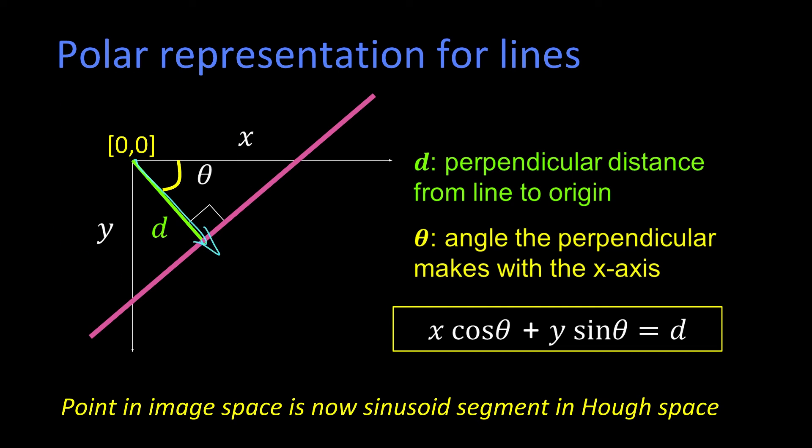But if d could be positive or negative, then theta only has to go from 0 to π, or 0 to -π, depending on how you draw that. The idea is you'd only need 180 degrees worth of coverage.